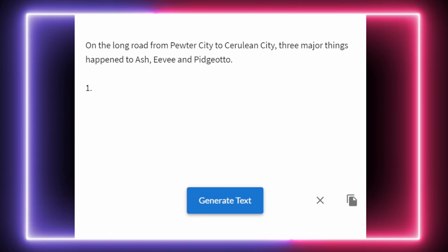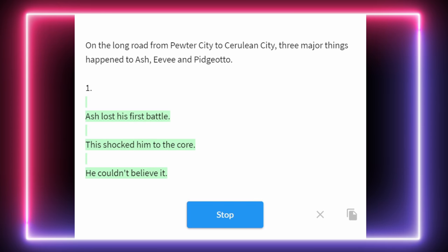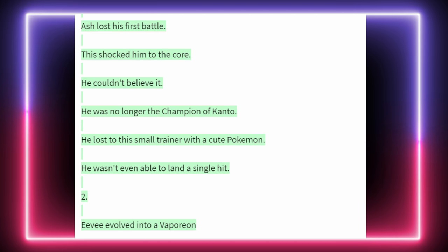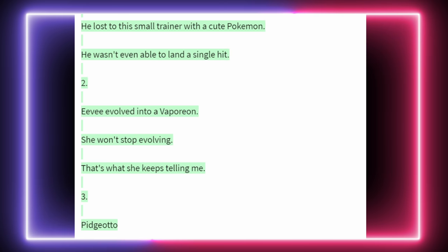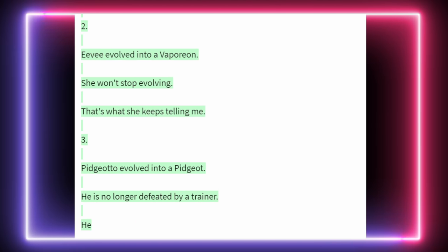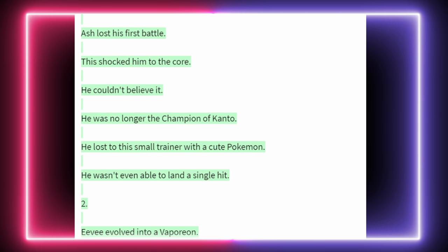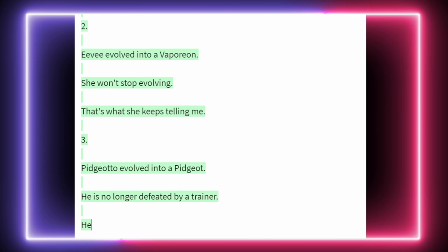On the long road from Pewter City to Cerulean City, three major things happened to Ash, Eevee, and Pidgeotto. One — Ash lost his first battle. This shocked him to the core. He couldn't believe it. He was no longer the champion of Kanto. Two — Eevee evolved into Vaporeon. Pidgeotto evolved into Pidgeot. Wait, we don't need to carry on — two major events there. Ash is no longer the champion of Kanto. Eevee evolved into Vaporeon and Pidgeotto evolved into Pidgeot. We've got a Pidgeot and a Vaporeon now. A really important piece of information: what colour is Vaporeon? Ash's purple Eevee had evolved — now Vaporeon's coat was a shade of pink. We have a pink Vaporeon, which is actually the shiny colour, so that completely gels with Eevee being shiny.